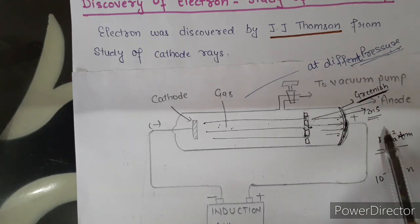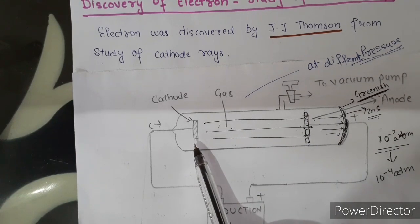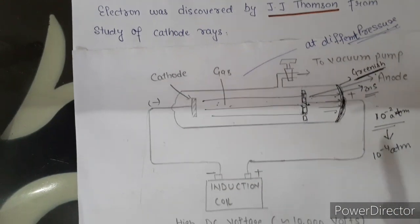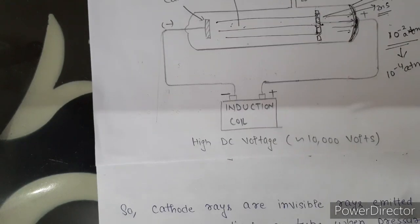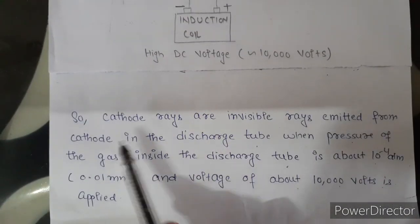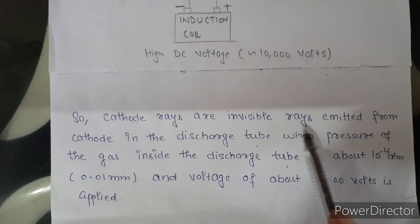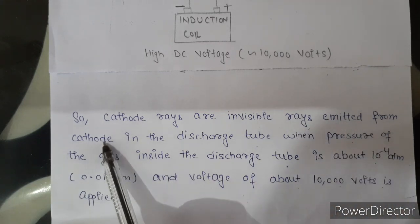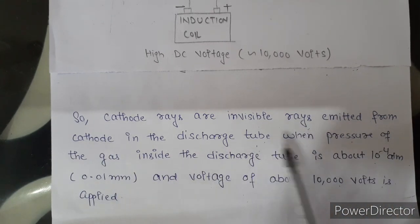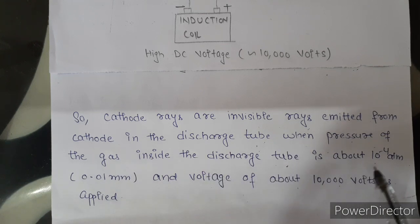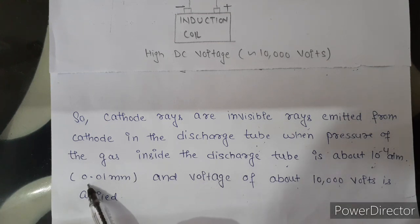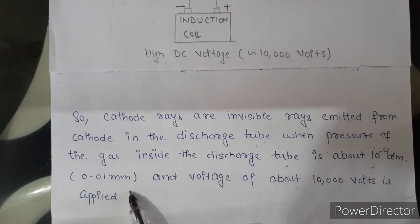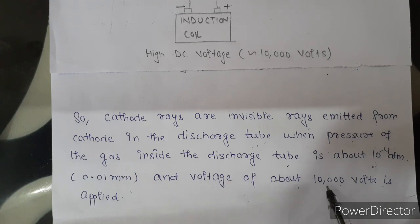Cathode rays are called cathode rays because these rays are emitted from the cathode. They are invisible rays emitted from the cathode in the discharge tube when the pressure of the gas inside the discharge tube is about 10 to the power minus 4 atmosphere (or 0.01 mm) and a voltage of about 10,000 volts is applied.